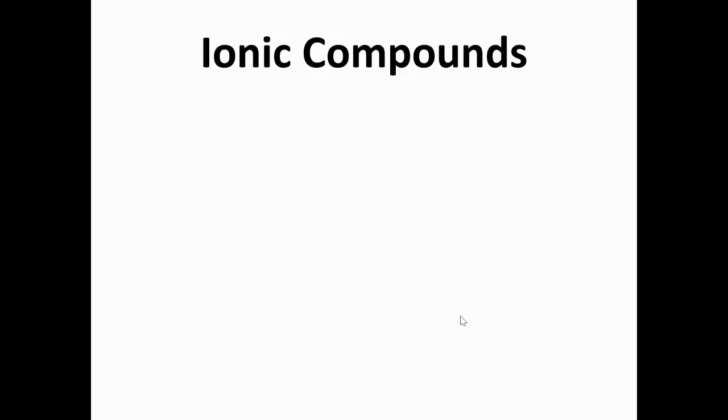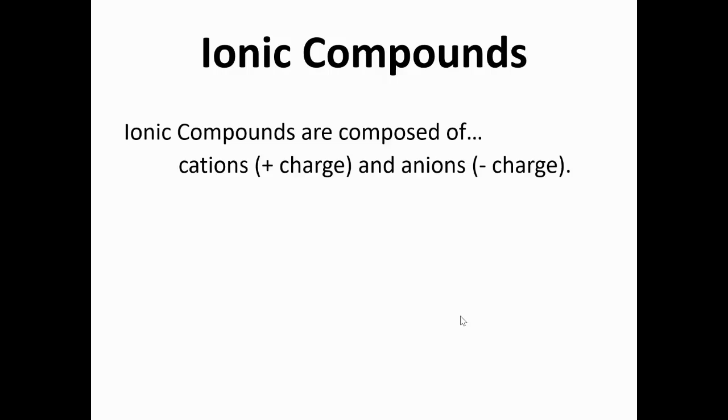Ionic compounds are composed of a cation and an anion. Cations have a positive charge. Anions have a negative charge.